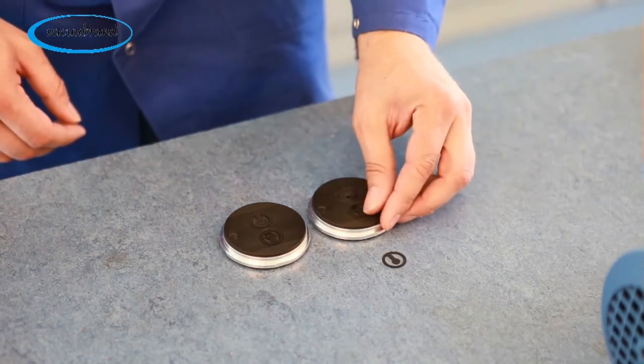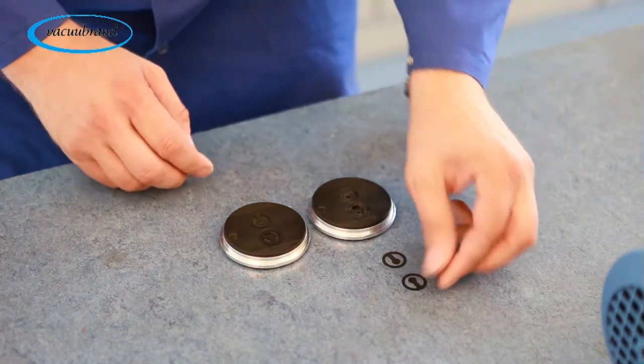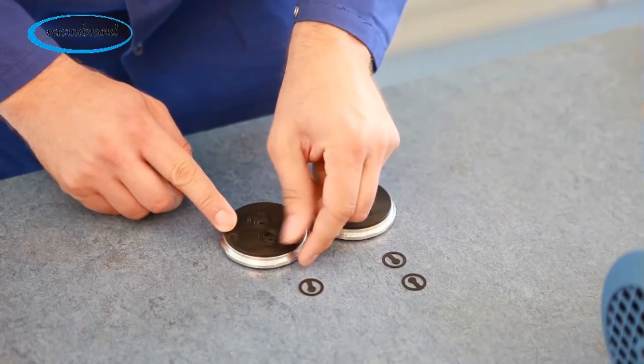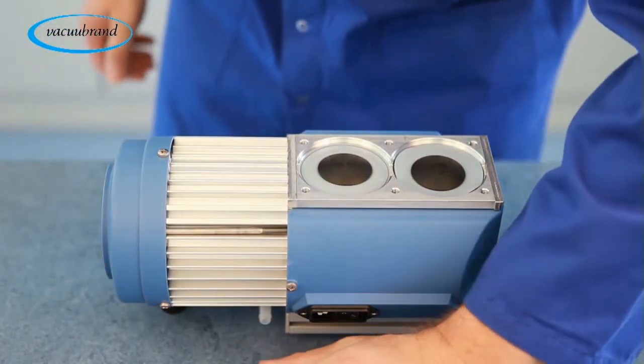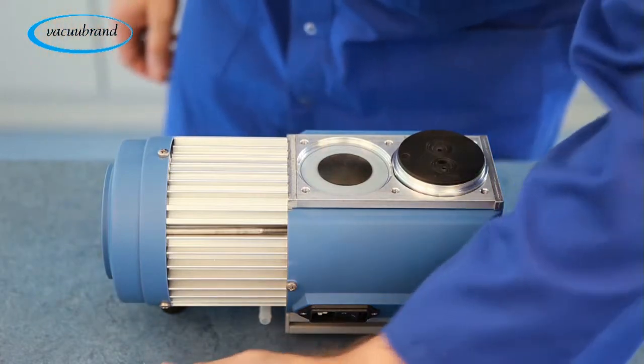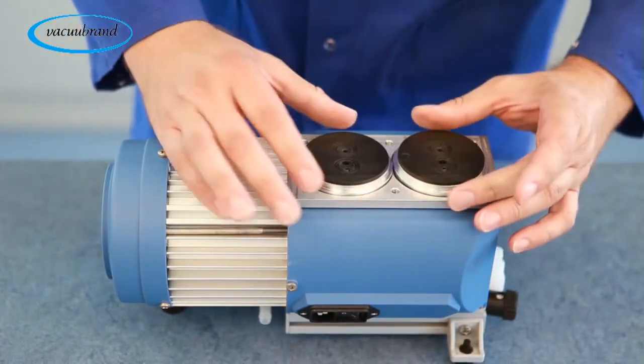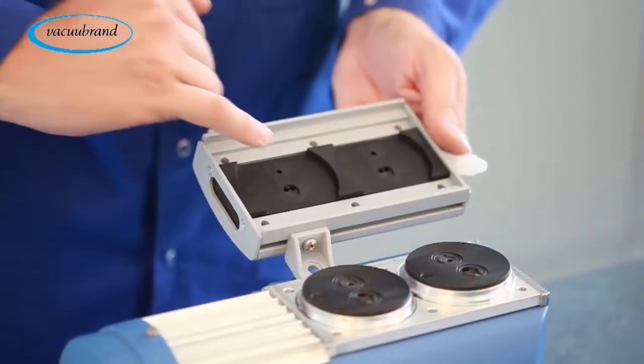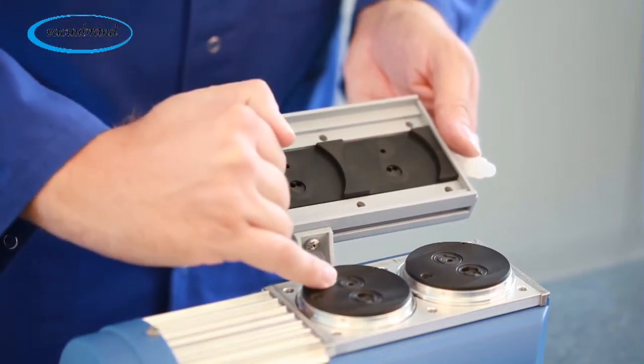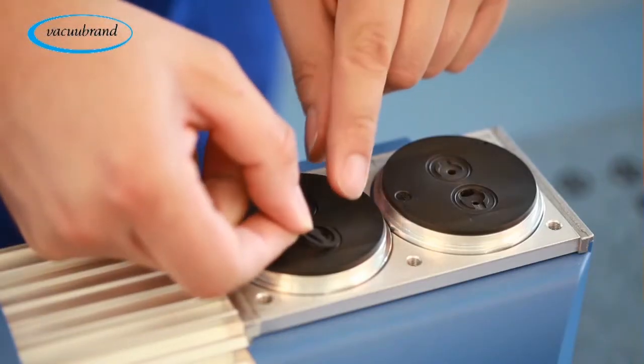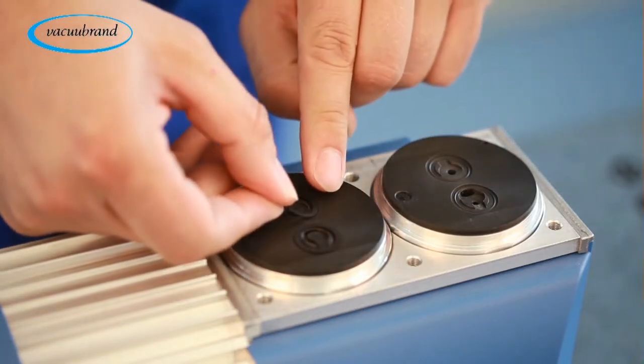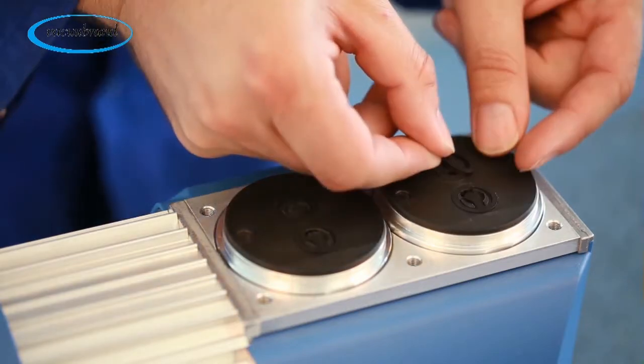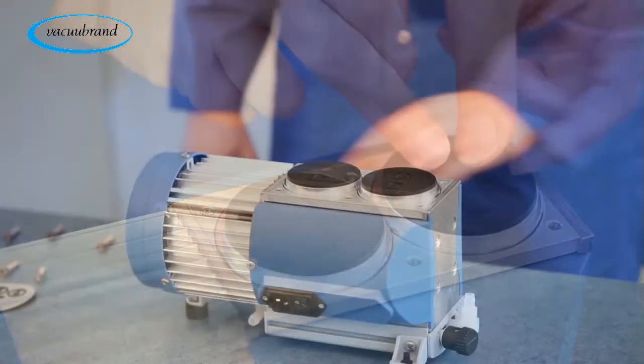Remove the old flapper valves from the head covers. Place the head covers back into position on the diaphragms. Be sure to line up the inlet and exhaust ports of the housing cover with the head covers. Replace the flapper valves with the new valves from the replacement kit. Again, make sure the flapper valves are properly seated into position in the head covers.